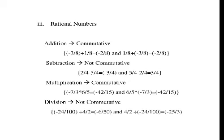Now consider rational numbers. For rational number addition, addition is commutative for rational numbers. For example, take two rational numbers minus 3 by 8 and 1 by 8. The addition gives minus 2 by 8. Similarly, 1 by 8 plus minus 3 by 8 also equals minus 2 by 8. Therefore, addition is commutative for rational numbers.